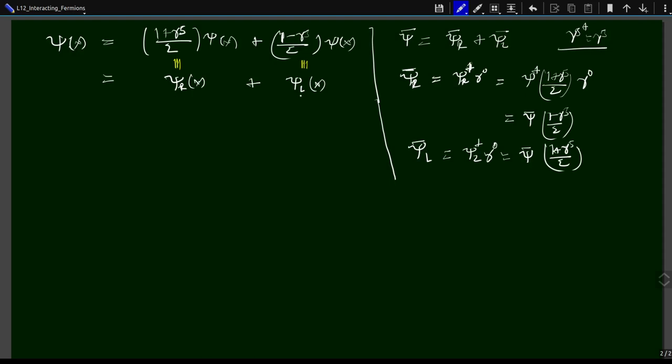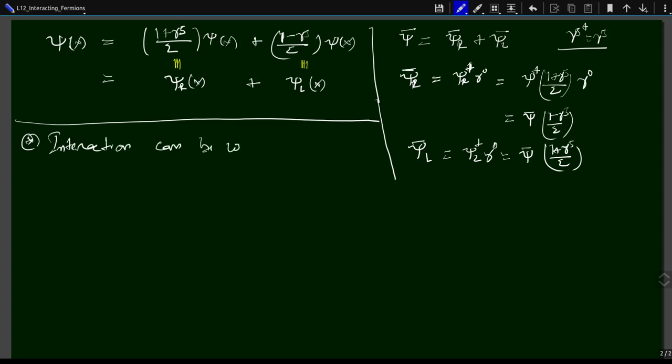Psi is decomposed into two Weyl components using projection operators (1 + gamma^5)/2 and (1 - gamma^5)/2. They project a given spinor into two orthogonal subspaces, each still two-dimensional. Now we move on to writing the possible interactions using the fermion bilinears.